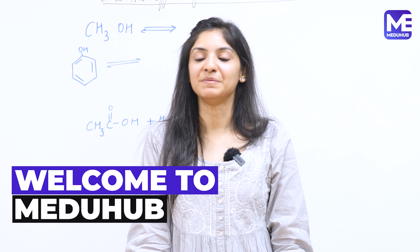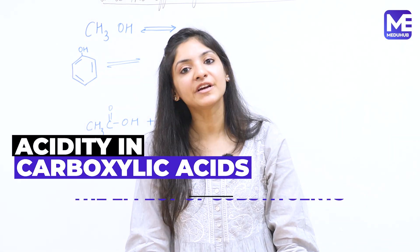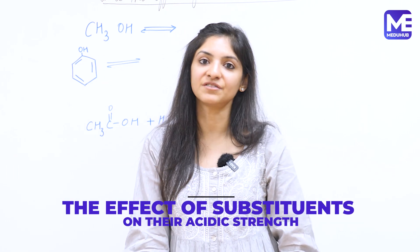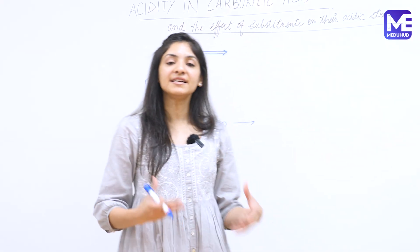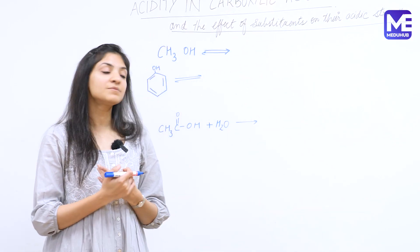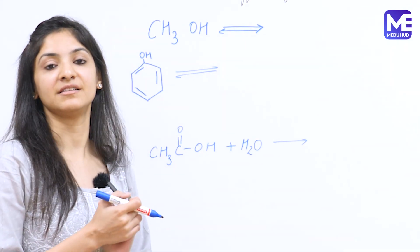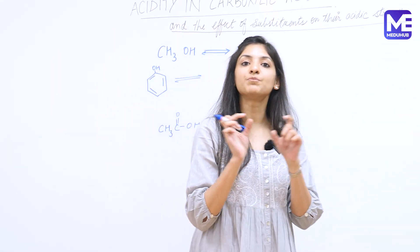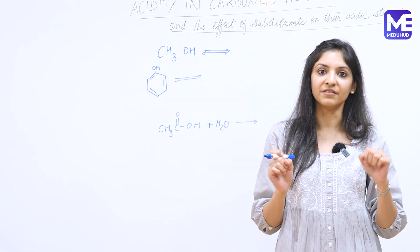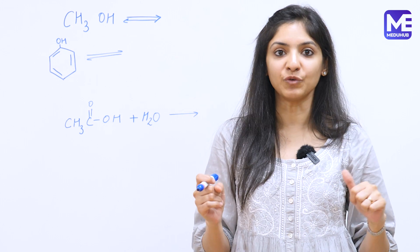Hello and welcome to MediHub. I am Neha Gupta, a part of our chemistry faculty, and today we will discuss the acidity in carboxylic acids and the effect of substituents on their acidic strength. To understand this we need to know why carboxylic acids are acidic. This is because of the presence of an OH group. This OH bond is polar because oxygen is electronegative, hence it pulls away the electrons and facilitates the release of a proton.